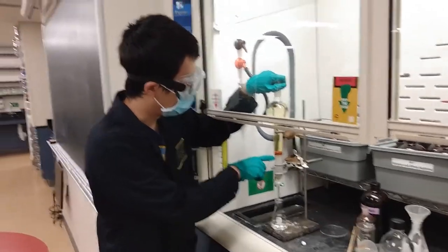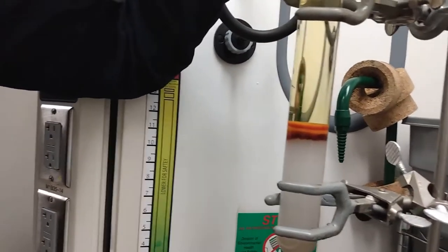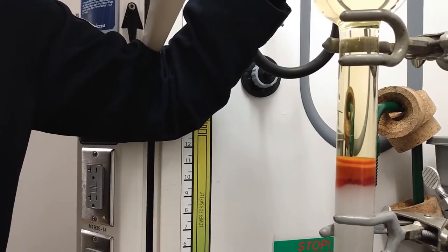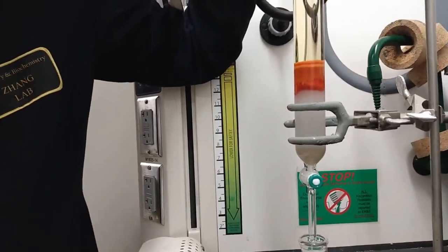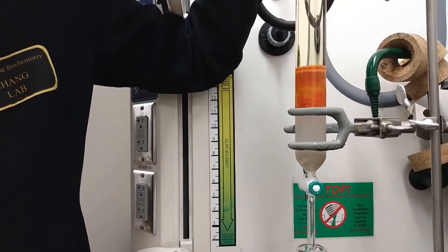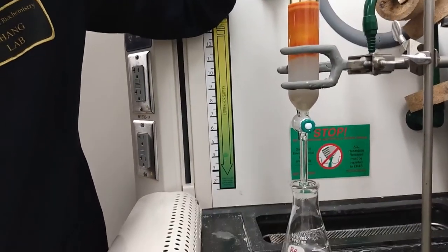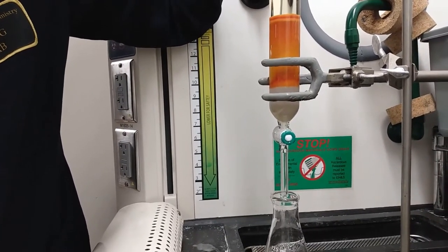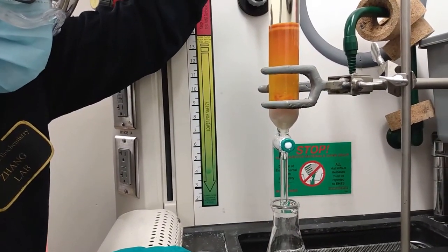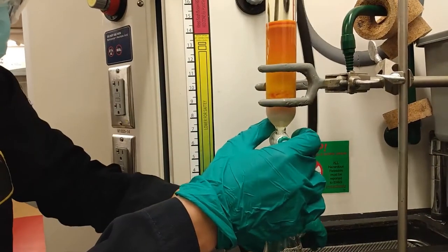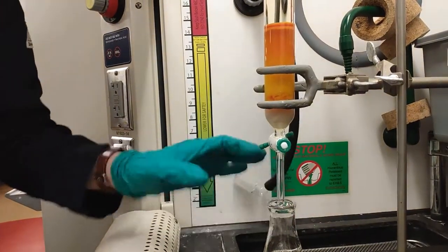We can see a red band starting to elute out. Now it's reached the bottom of the silica pad. Stop pushing right here and switch the container at the bottom.